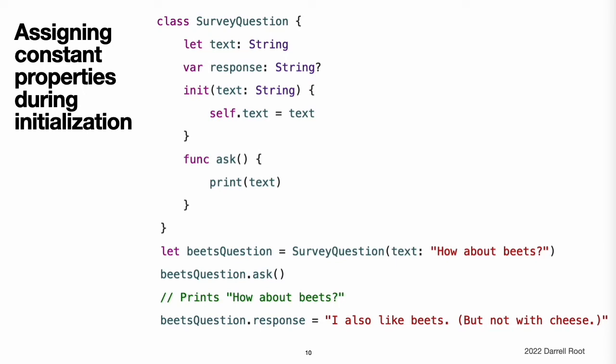You can assign a value to a constant property at any point during initialization as long as it is set to a definite value by the time initialization finishes. Once a constant property is assigned a value, it cannot be further modified.